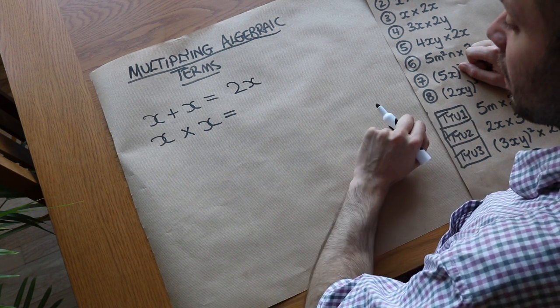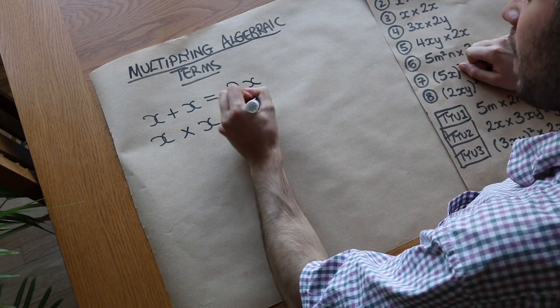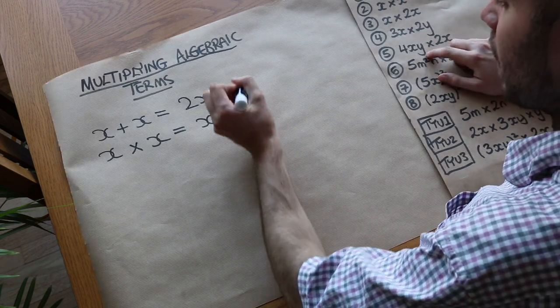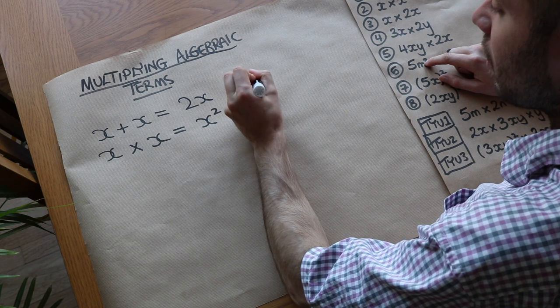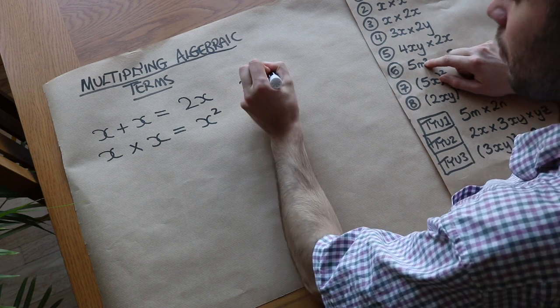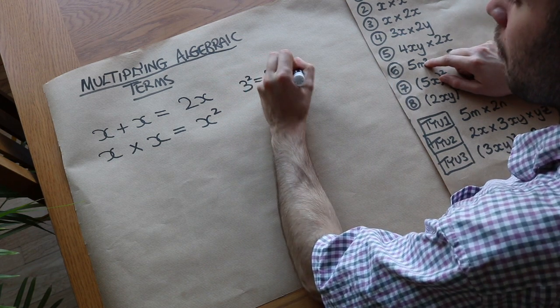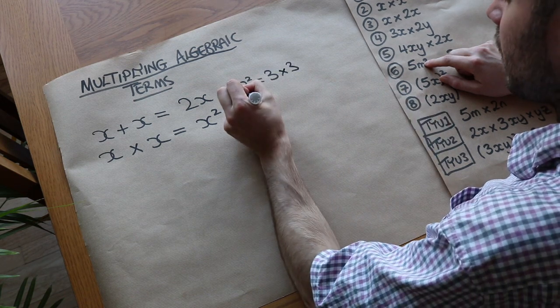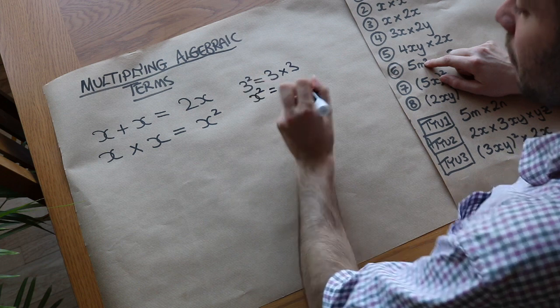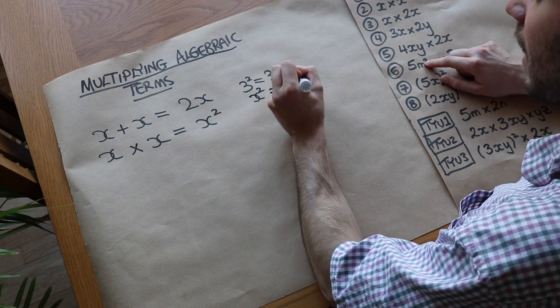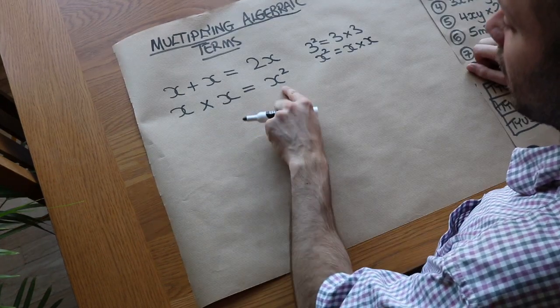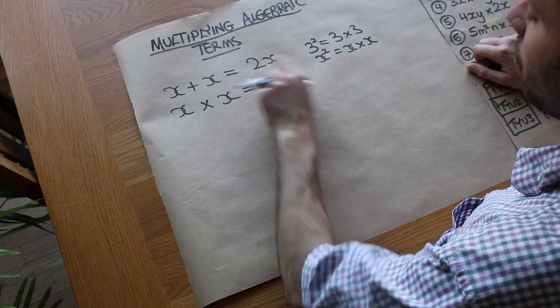But if you have x times x, then we can actually write that as x squared. And the reason we can write it like that is that we know that if we had, say, 3 squared, what that means is 3 times 3. It means a number multiplied by itself. That's what squaring means. So similarly, if you had x squared, that just means x times x in exactly the same way. So when we multiply these together, we get x squared instead of 2x.